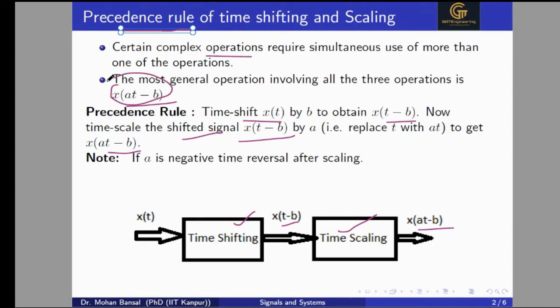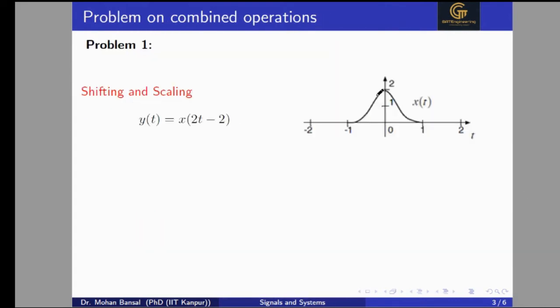For example, if we have a given signal x and we want to sketch a transformed signal, we first need to shift the signal, then apply the scaling. We will solve some problems here one by one. The first problem is that we have a given signal x and we have to apply a combined operation involving both time shifting and time scaling.